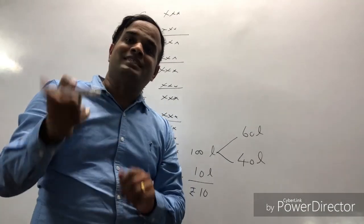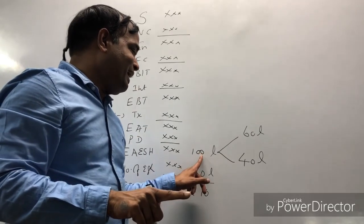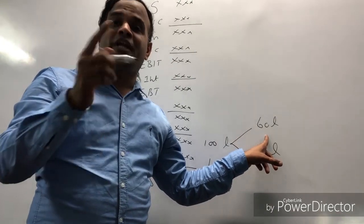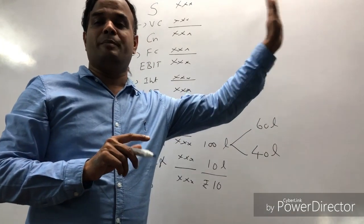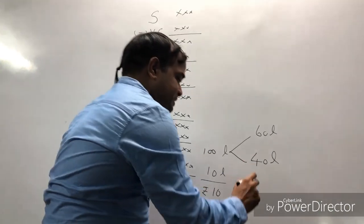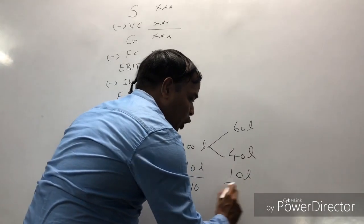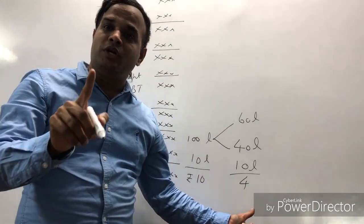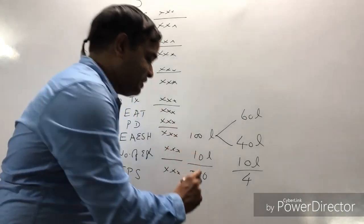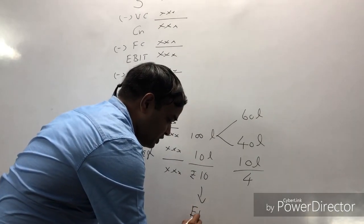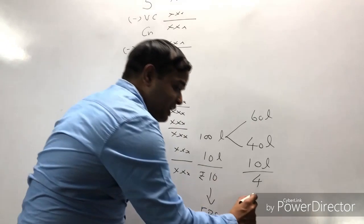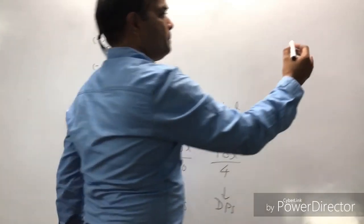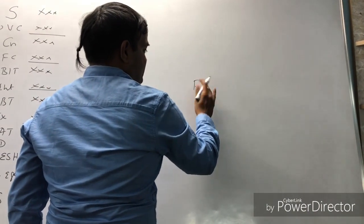Out of 100 lakhs, 60 lakhs is retained for purchasing the machinery, and the remaining 40 lakhs only is paid to shareholders as dividend. Even though as a shareholder you are entitled to get a share of 100 lakhs, the company is ready to pay only 40 lakhs. So with 10 lakh shares outstanding, each shareholder gets only 4 rupees per share instead of 10 rupees. The 10 rupees is called Earning Per Share (EPS), whereas 4 rupees is called Dividend Per Share (DPS).